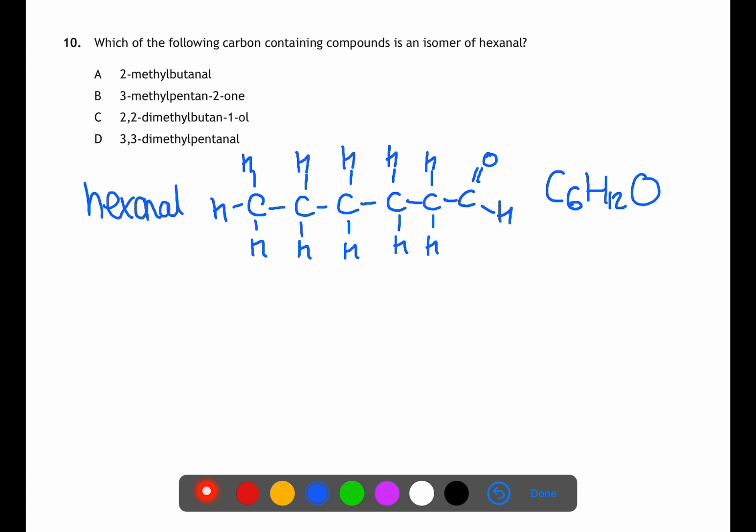Answer A 2-methylbutanol only has five carbons and therefore can be eliminated. Answer B has 3-methylpentanol. This means this has six carbons so is a potential answer. Answer C 2,2-dimethylbutanol also has six carbons so is a potential answer. Answer D 3,3-dimethylpentanol has seven and therefore can be eliminated.